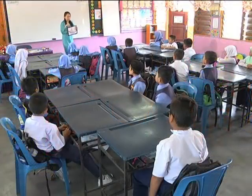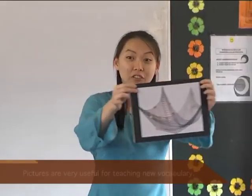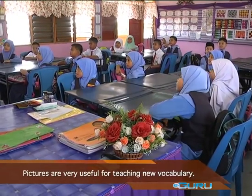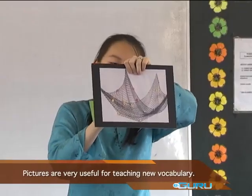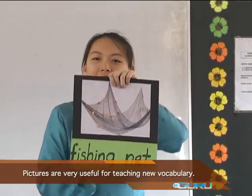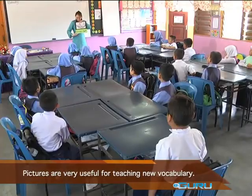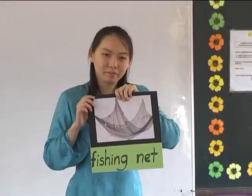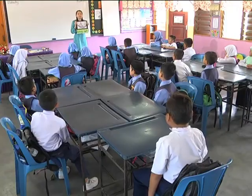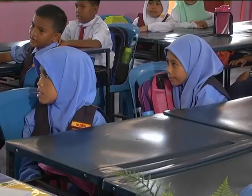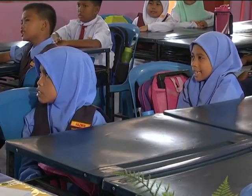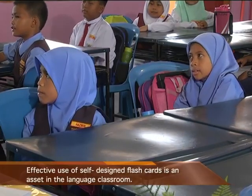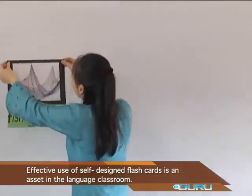I have a picture. What is this? A fishing net. Let's spell fishing net: F-I-S-H-I-N-G N-E-T. Fishing net.